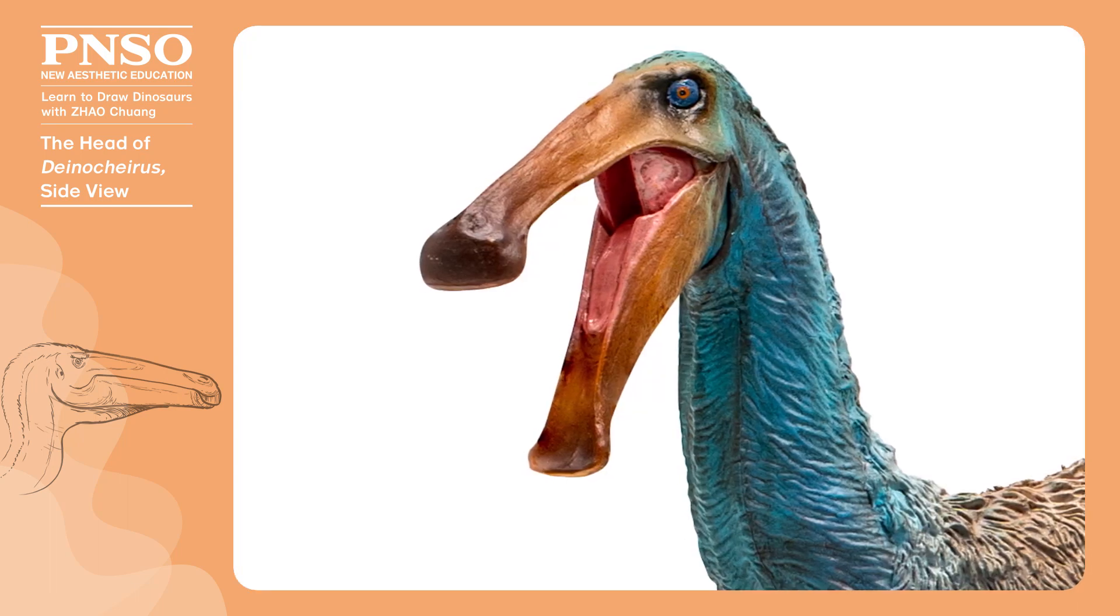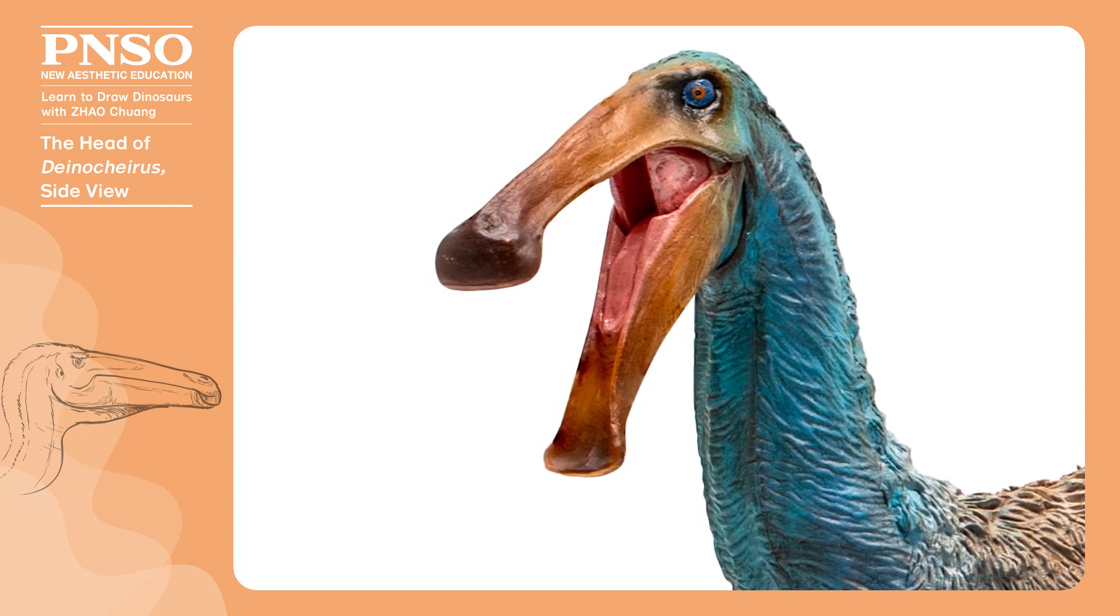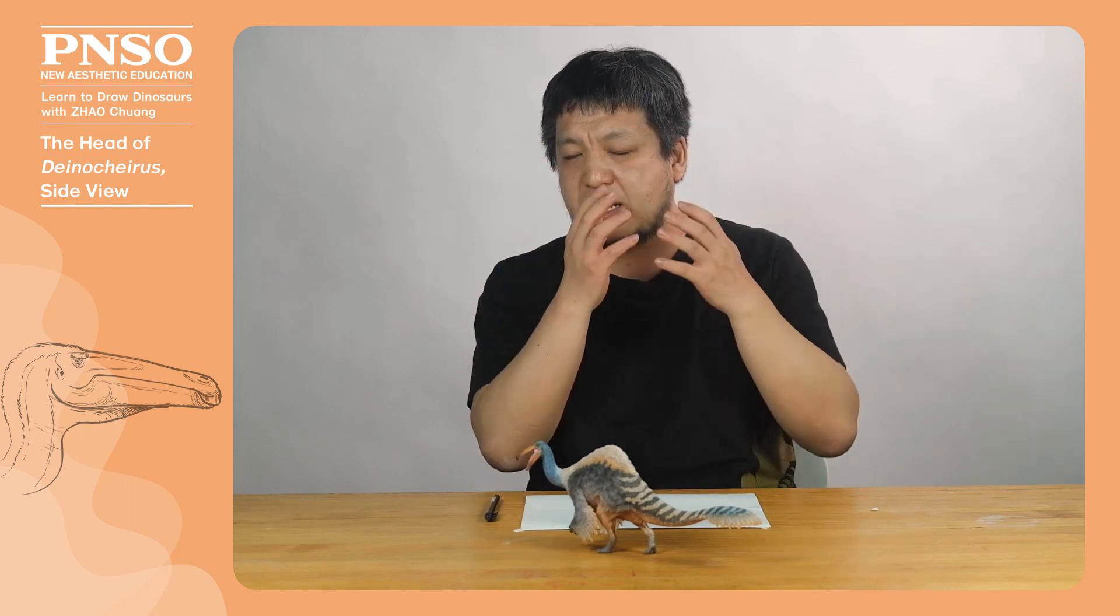It had no teeth. When it opened its mouth, we could see that it had zero teeth in its mouth. Probably because it lived in water, its nostrils were facing upward. We also should pay attention to this while drawing.